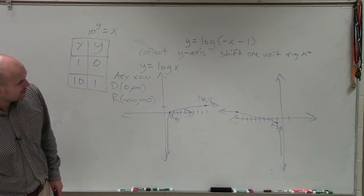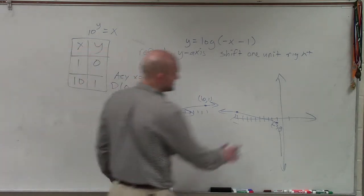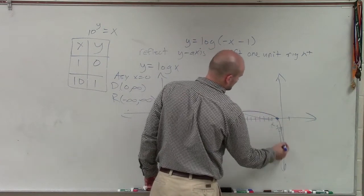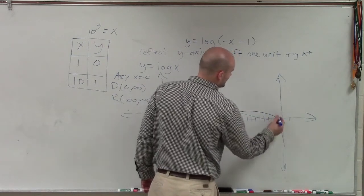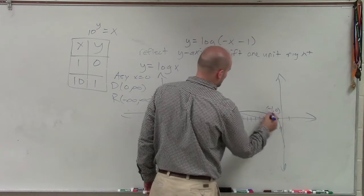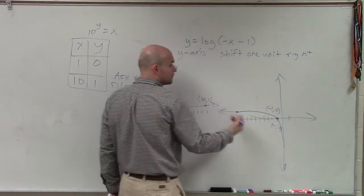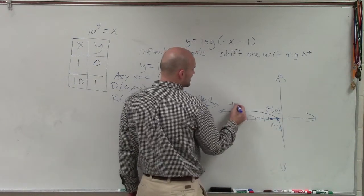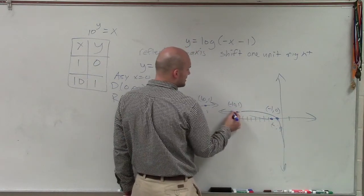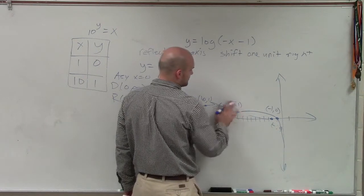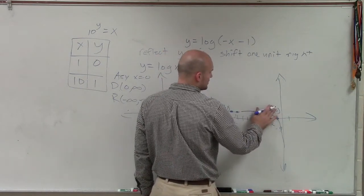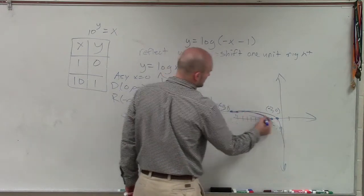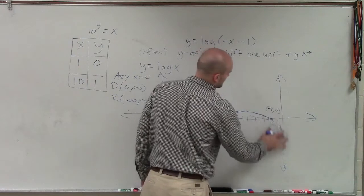So that's at negative 1 comma 0. Then what I'm going to do is now shift this graph over one unit to the left. So instead of it being negative 10, 1, now my point is going to be at negative 11 comma 1. Instead of negative 1 comma 0, now my y-intercept is going to be at negative 2 comma 0.